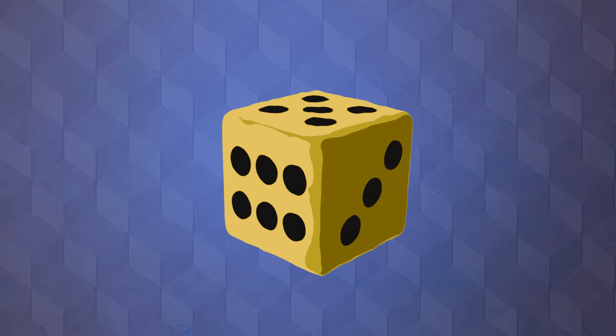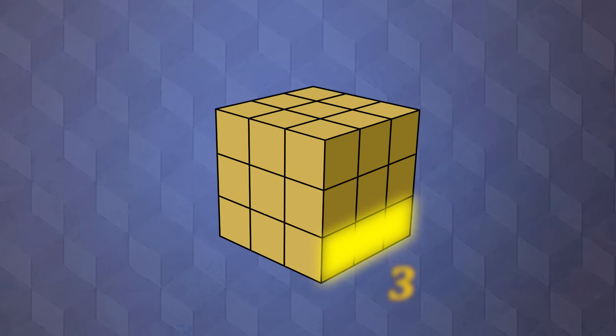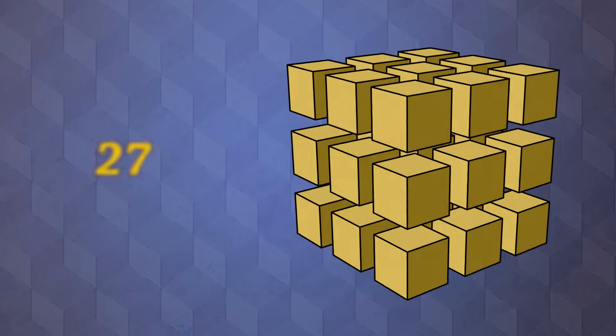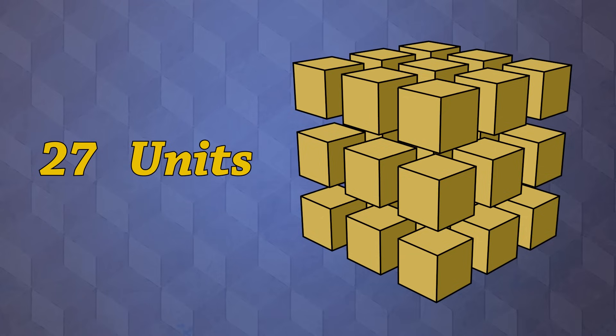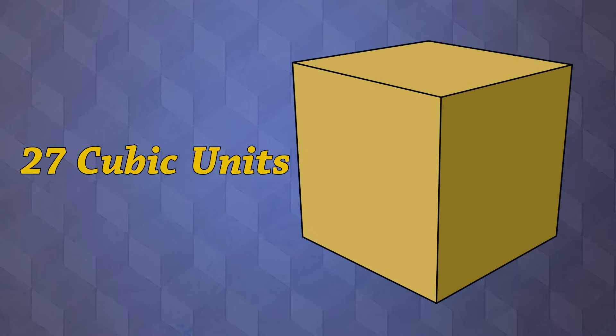Imagine a cube with edges of 3, multiply 3 by 3 by 3 to see. It can fit 27 units, gotta mention that they're cubic.